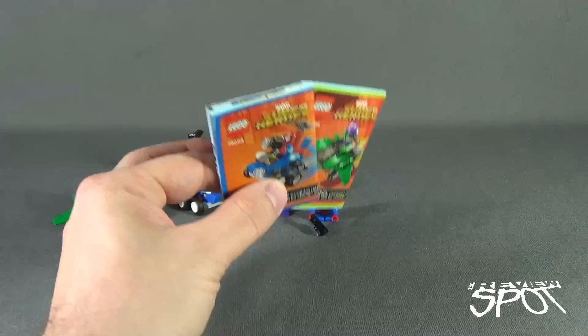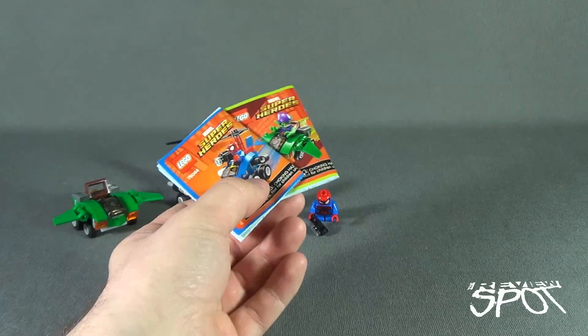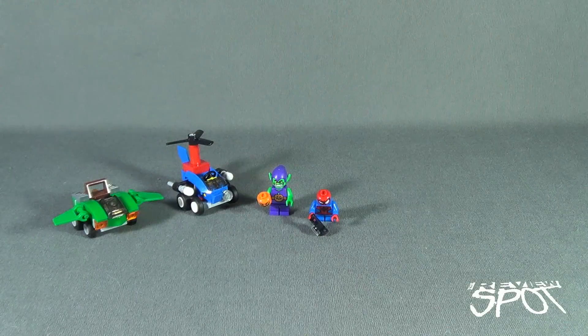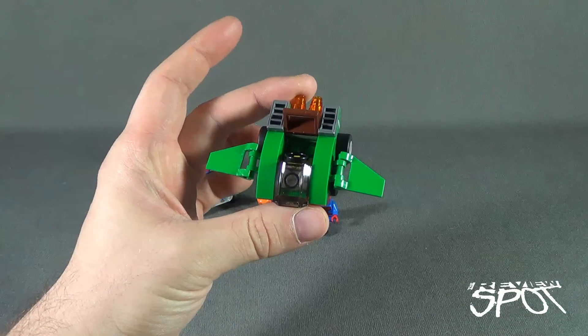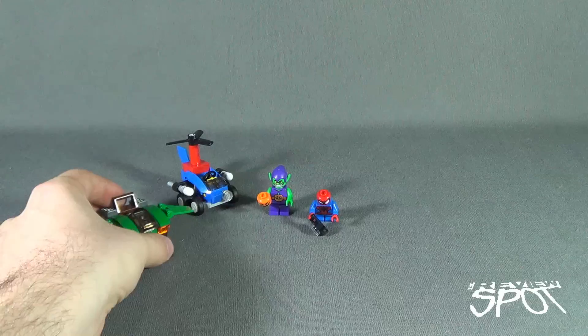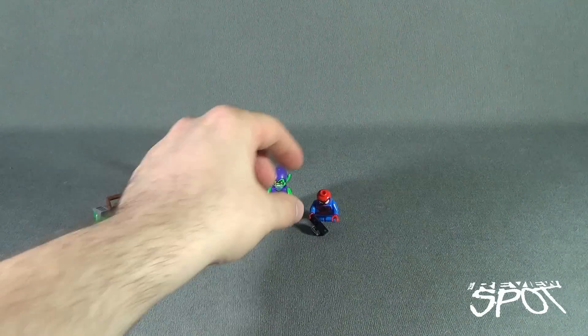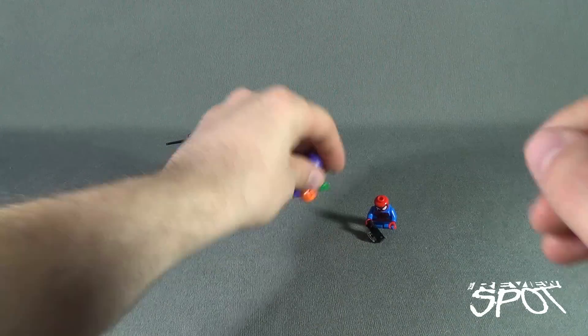The instructions for the vehicles are pretty much all the same. They start with the same base bottom to it and then you're just adding different components to it. So before we have a look at that, let's have a look at the Mighty Macros that come with the set.